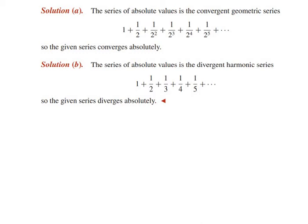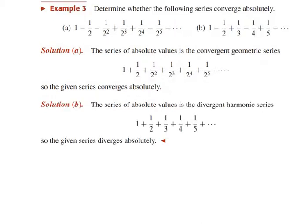For subdivision (b), the series is 1 − 1/2 + 1/3 − 1/4 + 1/5 − ... Taking the absolute values gives 1 + 1/2 + 1/3 + 1/4 + 1/5 + ..., which is the harmonic series, and we have already seen that it is divergent. Since the series of absolute values diverges, we conclude that the given series diverges absolutely.